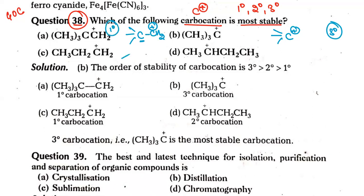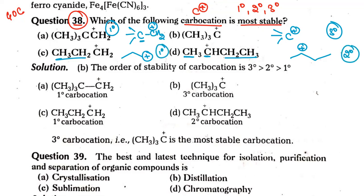Now for compound C: there is a carbocation that is again primary, because the carbon bearing the positive charge has only one alkyl group. For option D, the carbon bearing the positive charge has one alkyl group on one side and another alkyl group on the other side — it has a four-carbon chain. So at the second position there is a methyl group and an ethyl group, making this a secondary carbocation.